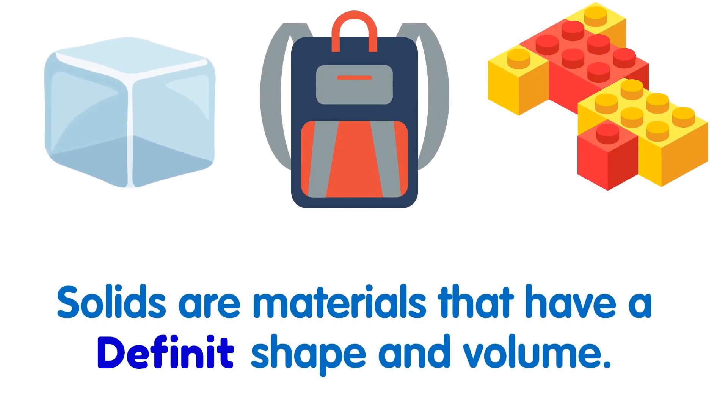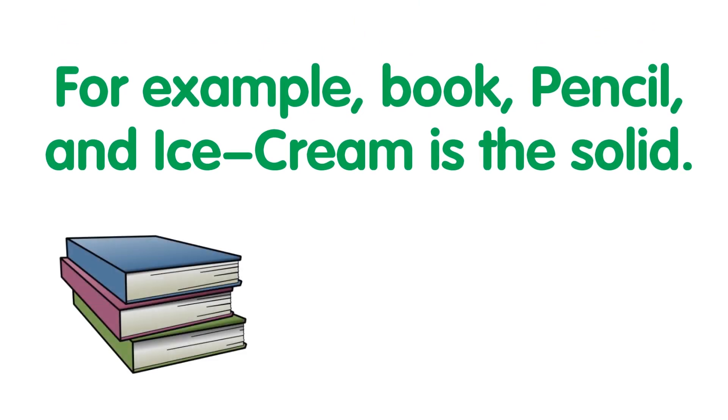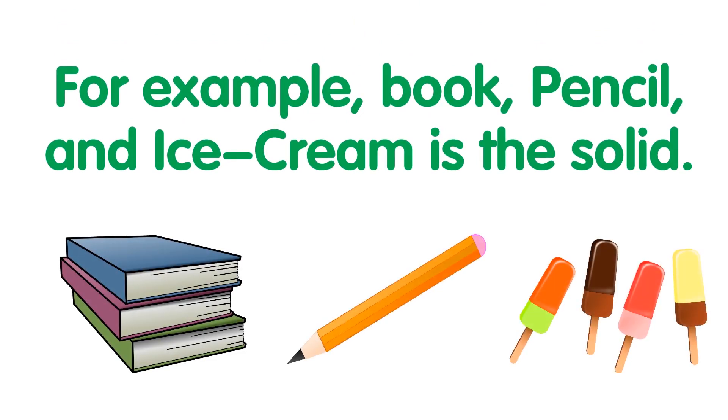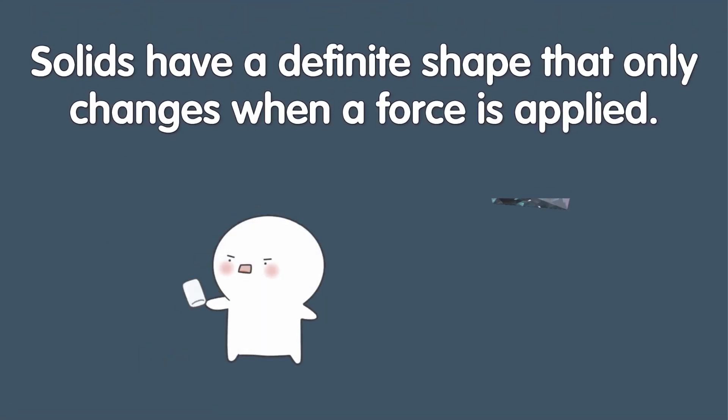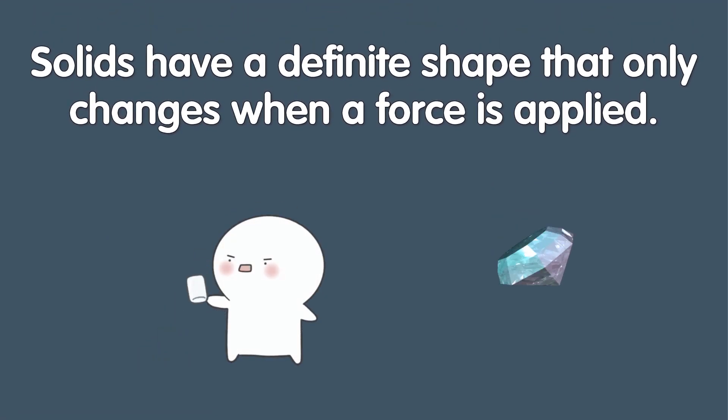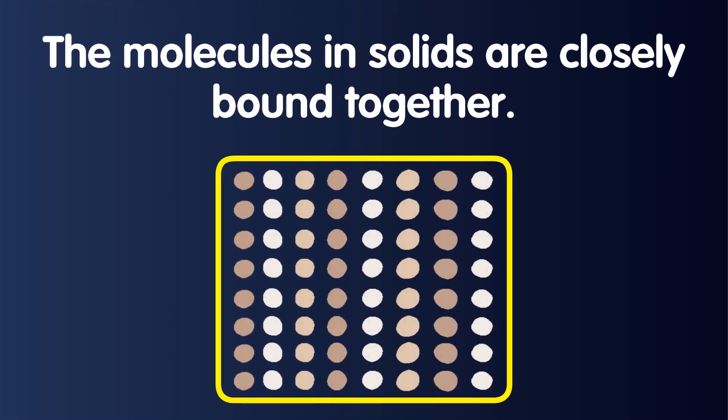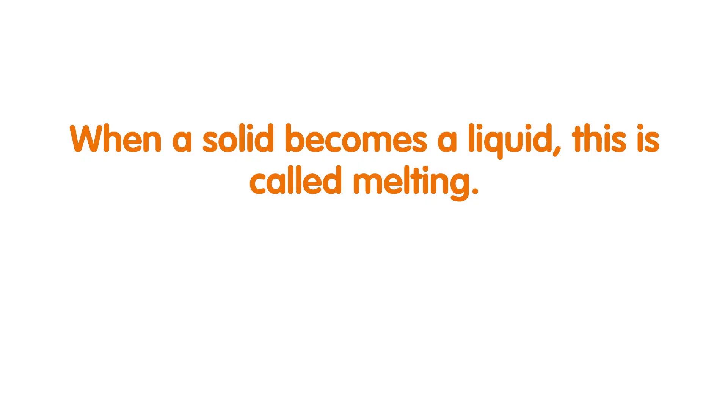Solids are materials that have a definite shape and volume. For example, a book, pencil, or ice cream is a solid. Solids have a definite shape that only changes when a force is applied. The molecules in solids are closely bonded together.